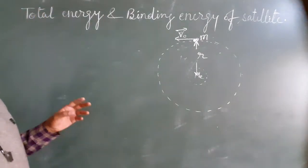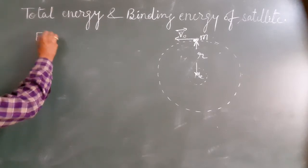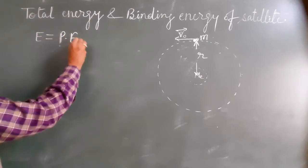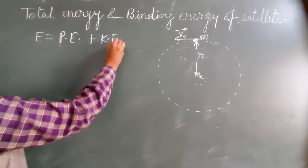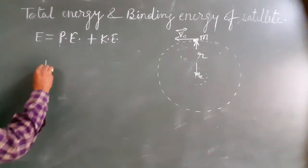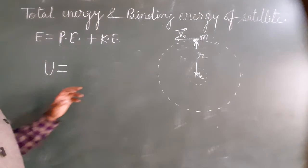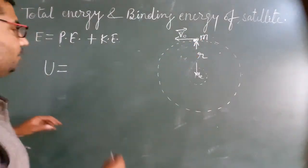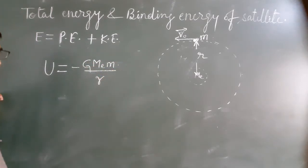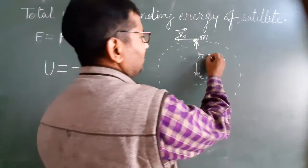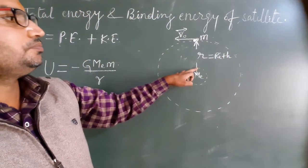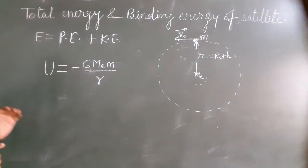So the total energy of the satellite will be the sum of gravitational potential energy plus kinetic energy. The gravitational potential energy U of the satellite will be minus G M m upon r, where r can be written as capital R_e plus h, and h is the height of the satellite from earth's surface.